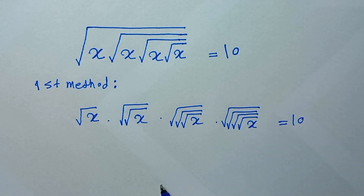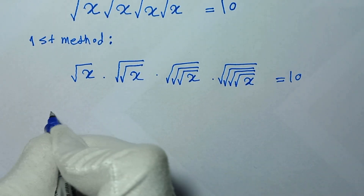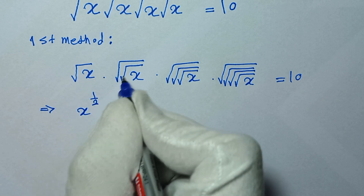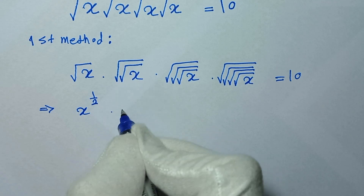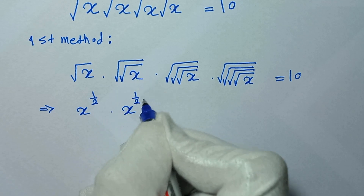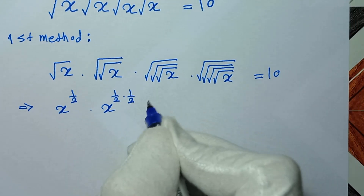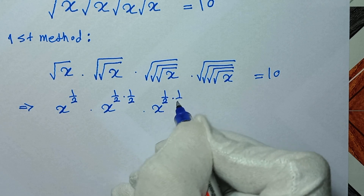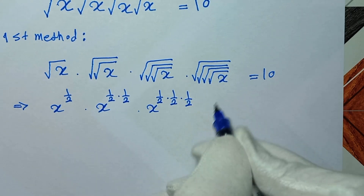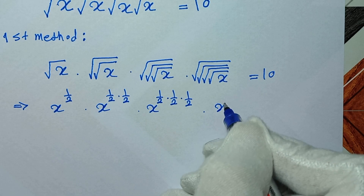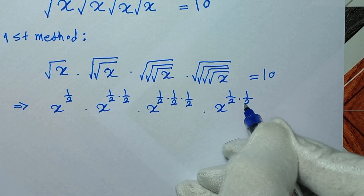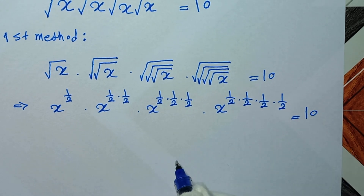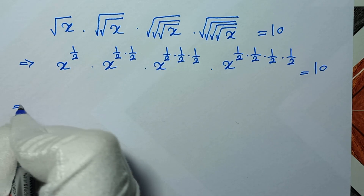In the next step, we write x as x to the power of 1/2. Here we have 2 square roots, so it will be x to the power of 1/2 times 1/2. Here we have 3 square roots, so x to the power of 1/2 times 1/2 times 1/2. And here we have 4 square roots, so it will be x to the power of 1/2 times 1/2 times 1/2 times 1/2, all equals 10.